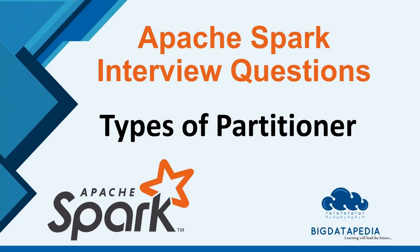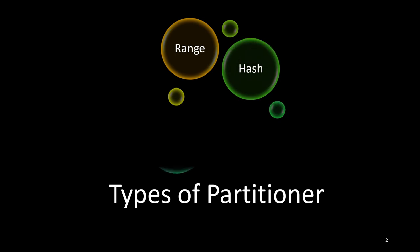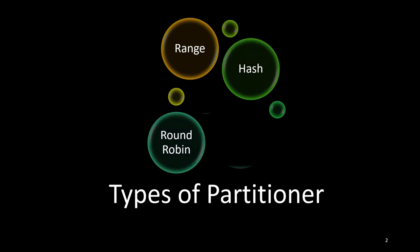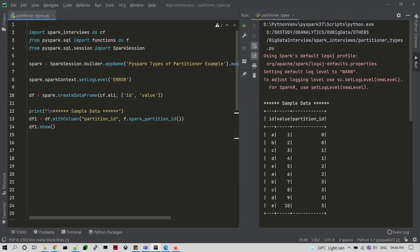Welcome back to our interview tutorial. In this video we are going to discuss different types of partitioning in Spark with some examples. Many people know only two types of partitioning in Spark — range and hash — but actually there are four: range, hash, round robin, and single partition. We are going to see all four with examples.